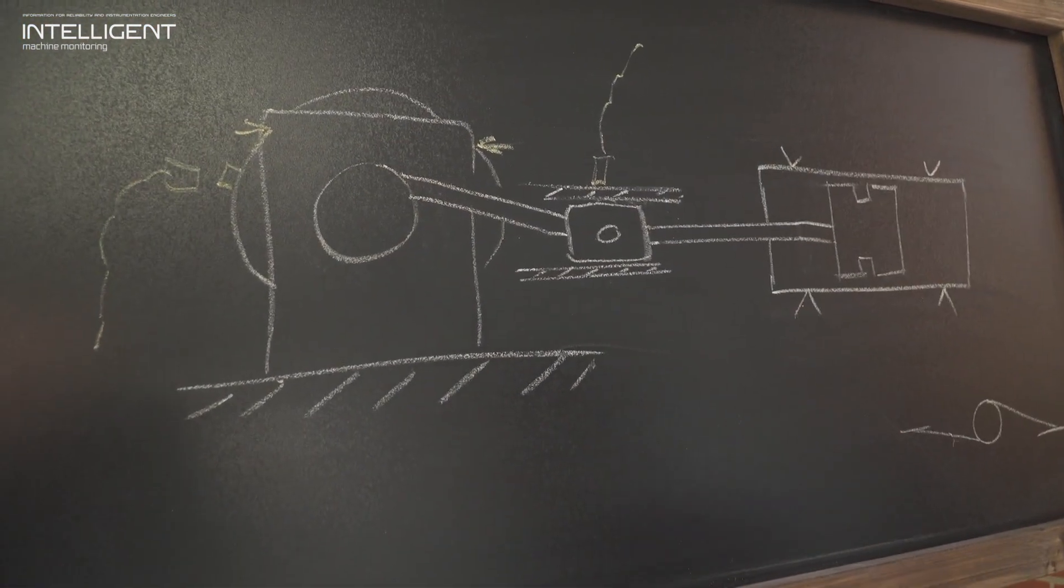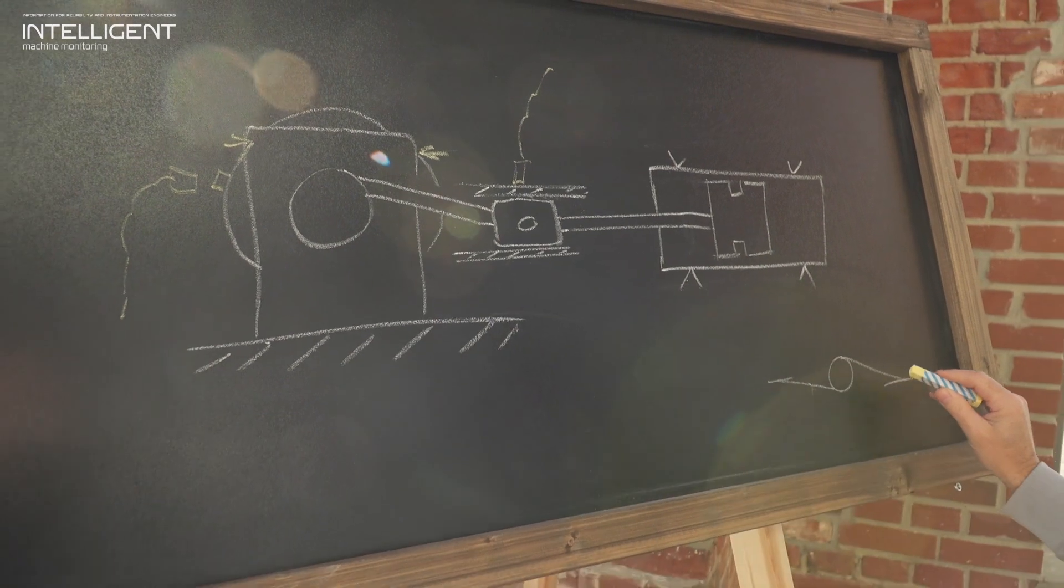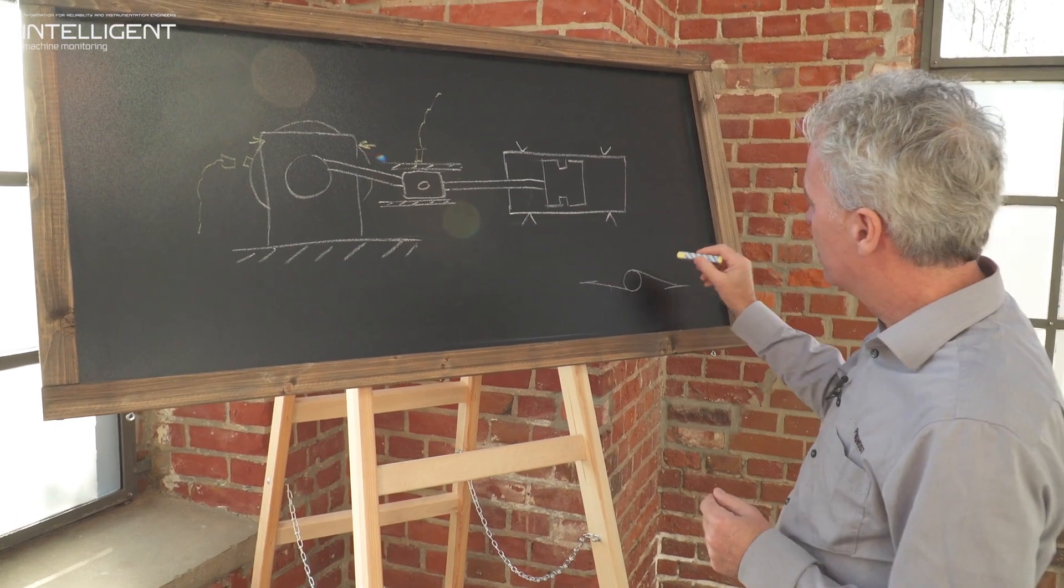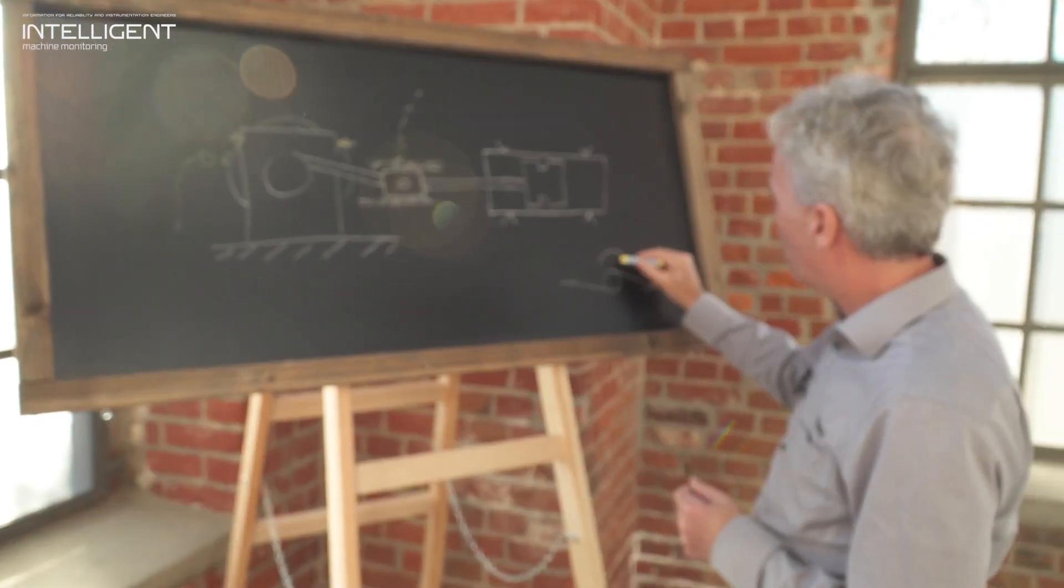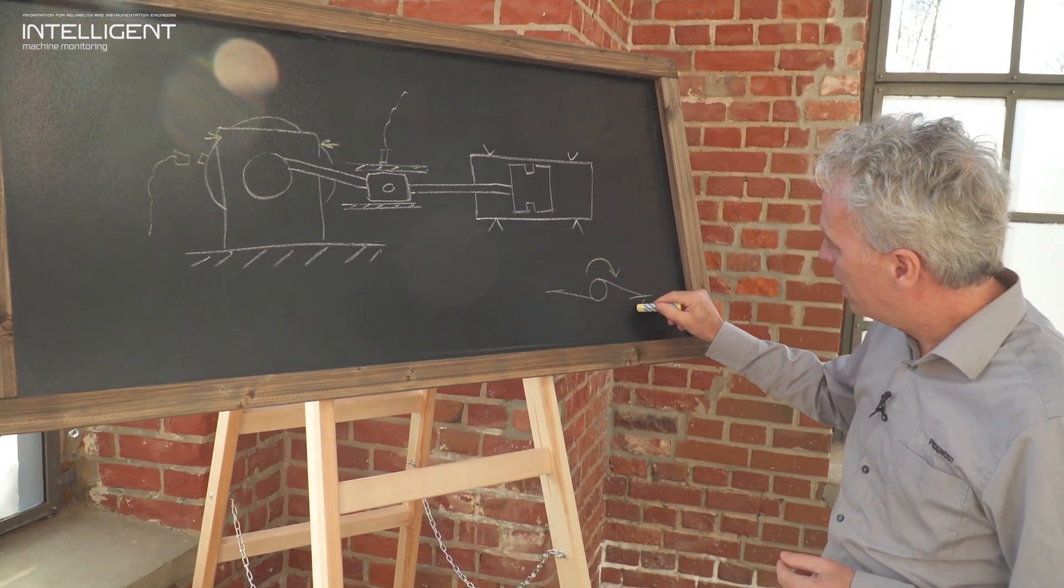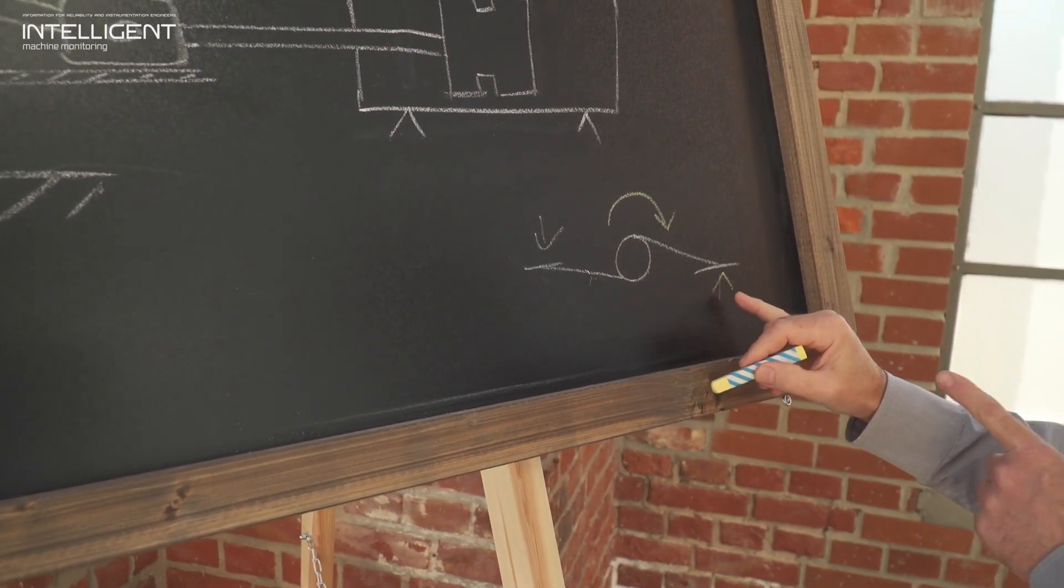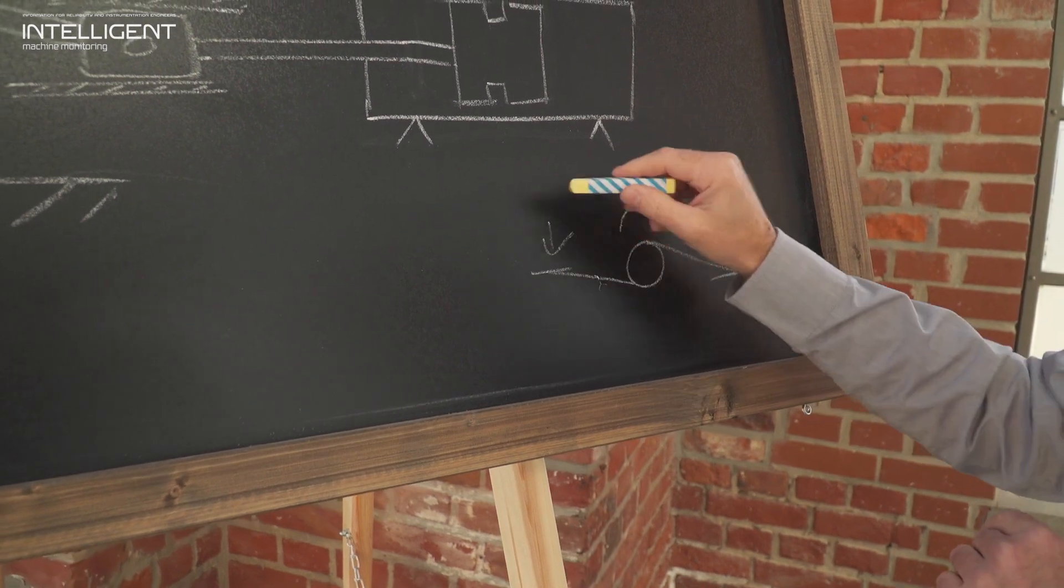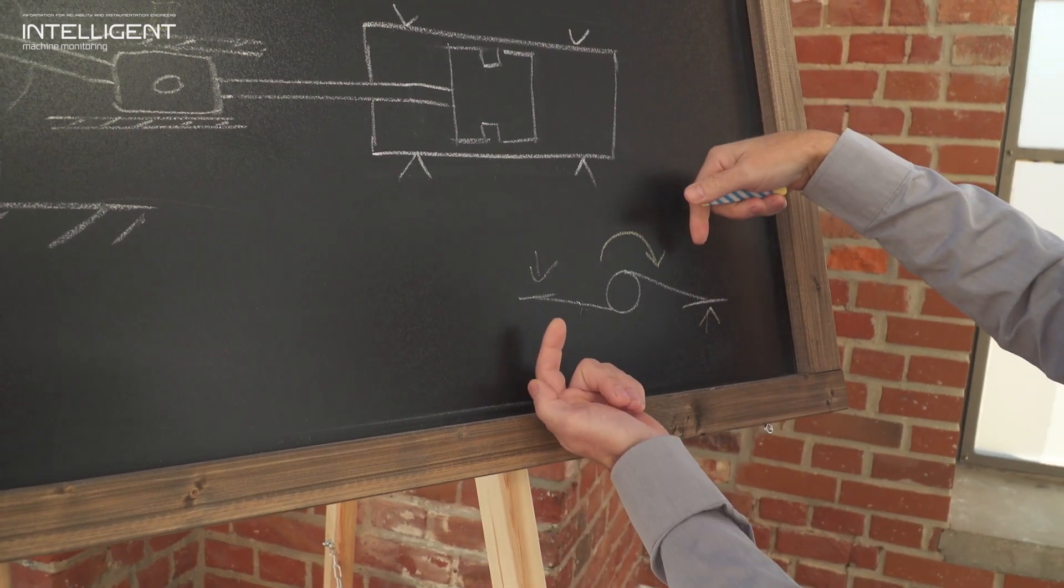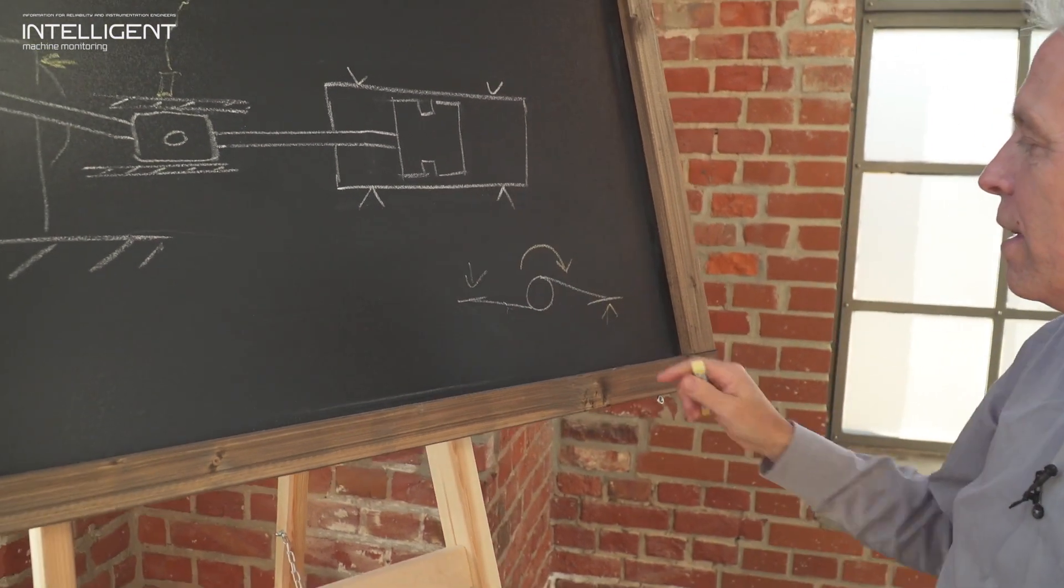The location of the acceleration sensor at the crosshead guide depends on the rotating direction of the crankshaft. The connecting rod only applies vertical forces to the crosshead guide, meaning if we have clockwise rotating direction, we would recommend to install the acceleration sensors below the crosshead guide here and here on top of the crosshead guide. In case the rotating direction is counterclockwise, we would install the sensors the other way around, provided that sufficient clearance is available beneath the crosshead guides.